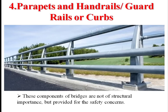Parapet wall — also called handrail, guard rail, or curb: this component of bridges is not of structural importance but is provided for safety concerns. It may be made of steel, brick, or solid concrete.